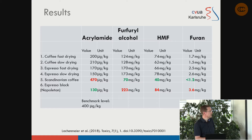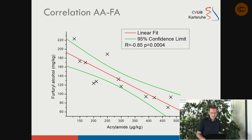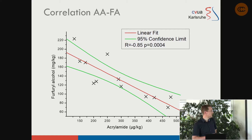We also see a negative correlation between some of these contaminants. For example, the higher the acrylamide levels, the lower the levels of furfuryl alcohol, which is another heat-induced contaminant. So there are several different formation and degradation processes occurring during coffee roasting simultaneously.